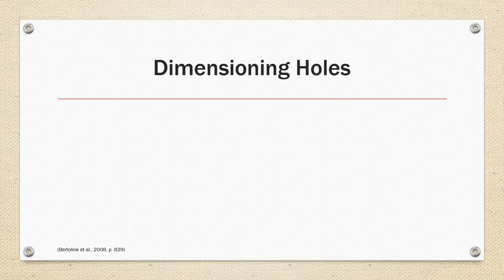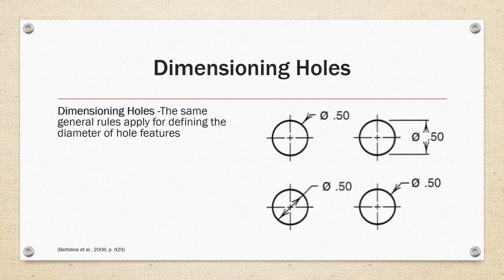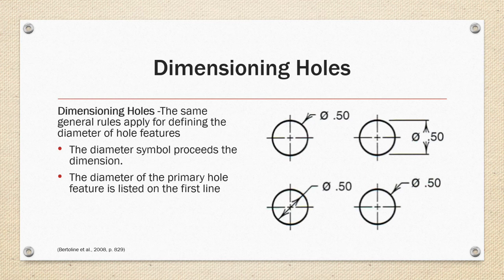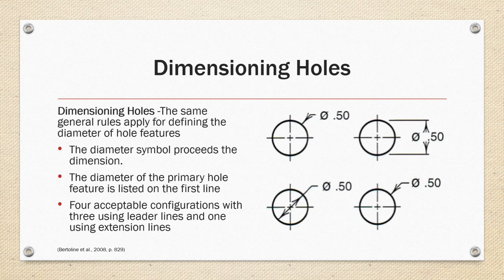Dimensioning Holes. When dimensioning holes, the same general rule applies for defining the diameter of the hole, which are the diameter symbol precedes the dimension, the diameter of the primary hole feature is listed on the first line, and there are four acceptable configurations for dimensioning the diameter of a hole, including three that use leader lines and one that uses extension lines, as shown on the right.